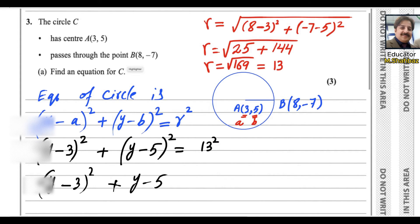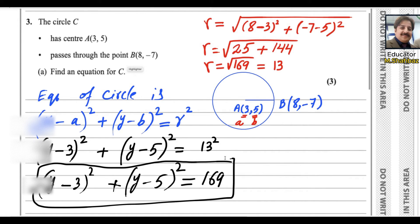(x-3)² + (y-5)² = 169. This is the required equation of the circle. It is just three marks so it is enough.